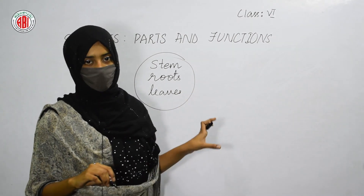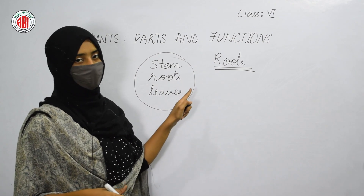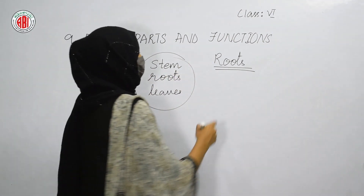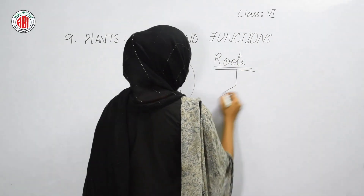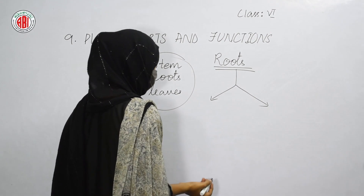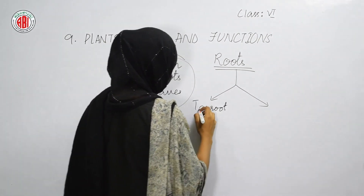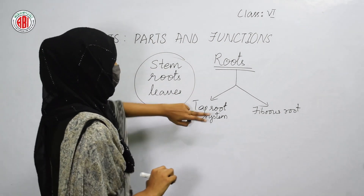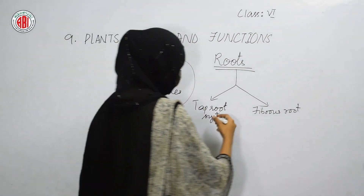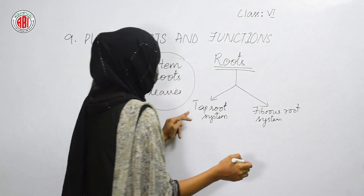Let us discuss about roots first. Roots are the parts of the plant that are found under the ground. These roots are basically classified into two main types based on their structure, and they are called tap root and fibrous root. So the root system is classified into two main types: tap root system and fibrous root system.